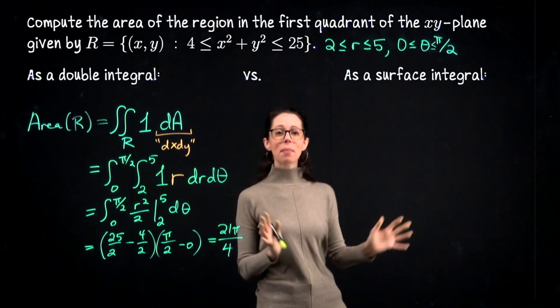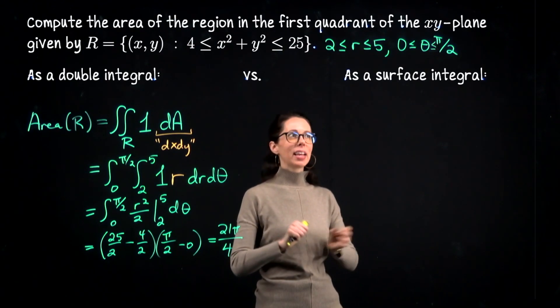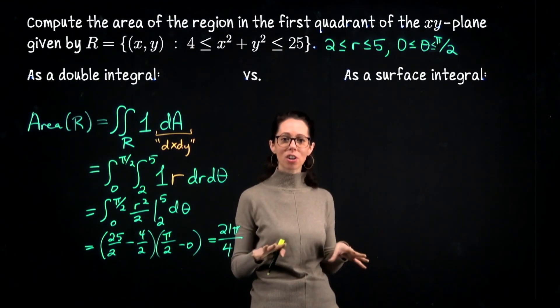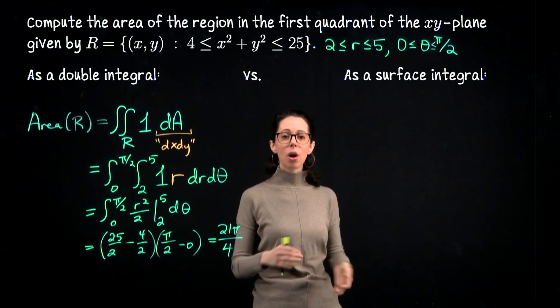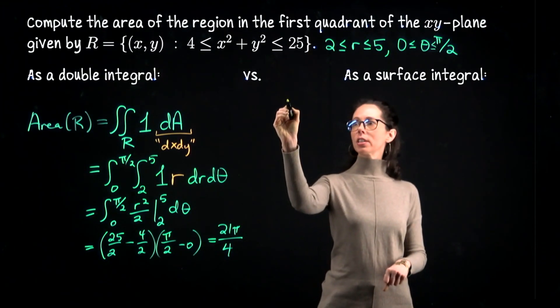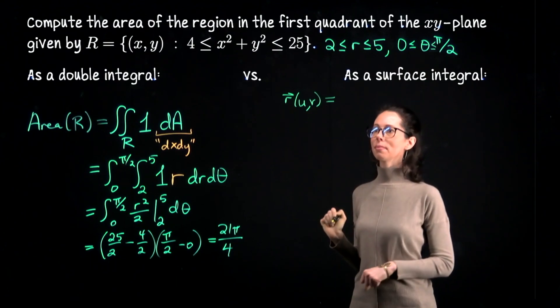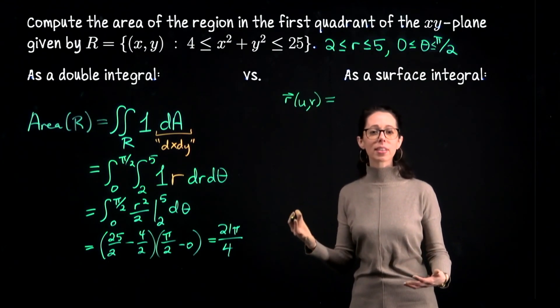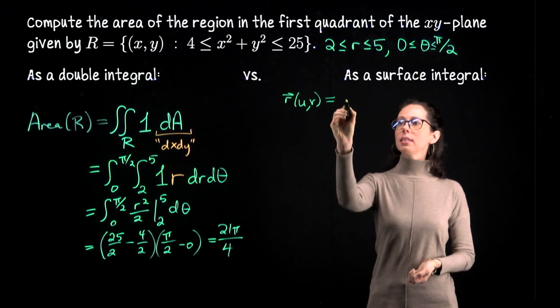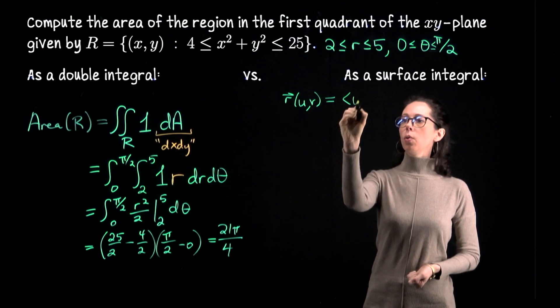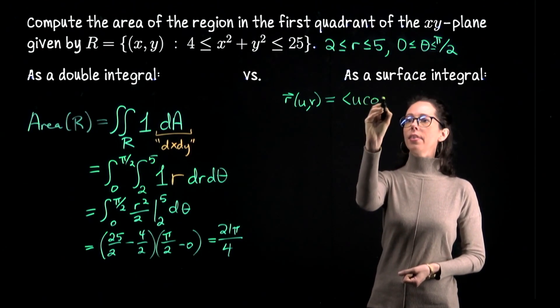Let's see if we can get to the same result reimagining this as a surface integral computation. So what I mean by that is I want to parametrize this region in R² like a flat surface and then do a surface integral where the integrand will be 1. So what we need first is a parametric description of the surface. I will describe this as a surface in R³.